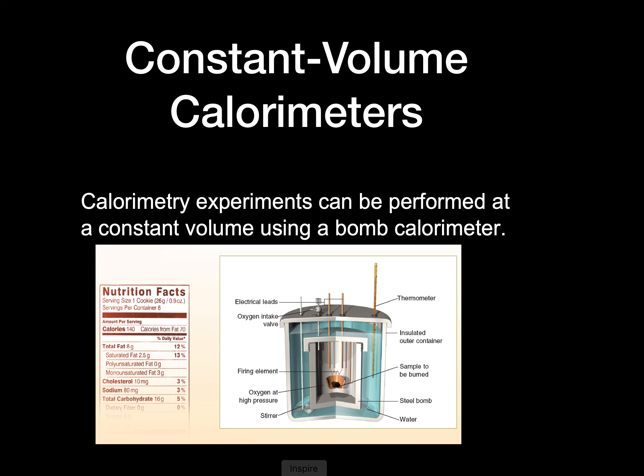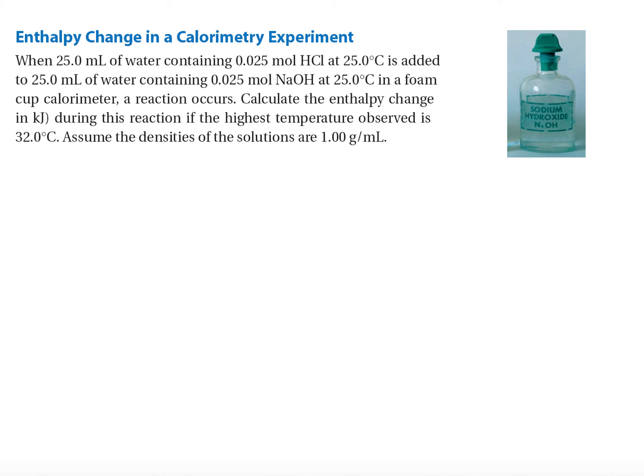Enthalpy change in a calorimetry experiment: When 25 milliliters of water containing 0.025 moles of HCl at 25 degrees is added to 25 milliliters of water containing 0.025 moles of NaOH at 25 degrees celsius in a foam cup calorimeter, a reaction occurs. Calculate the enthalpy change in kilojoules during this reaction if the highest temperature observed is 32 degrees celsius. Assume the densities of the solutions are one gram per milliliter.